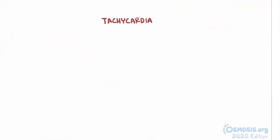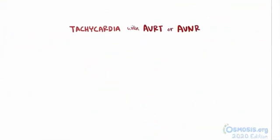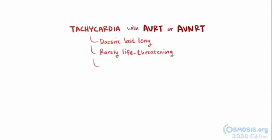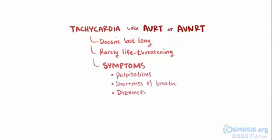The tachycardia with AVRT and AVNRT typically doesn't last very long, and both are rarely life-threatening. They can both produce symptoms like palpitations, shortness of breath, and feelings of dizziness, as well as syncope, or fainting, in rare cases.